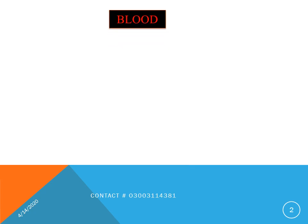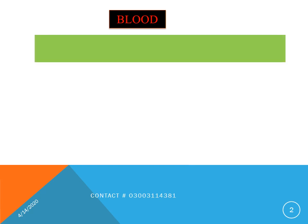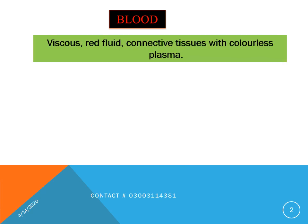Blood is the circulatory fluid of the human body and mostly present in all types of closed-type circulatory system possessing organisms. Humans possess around about 4 to 5 litres of blood. Blood is a red-colored viscous connective tissue with colorless plasma.